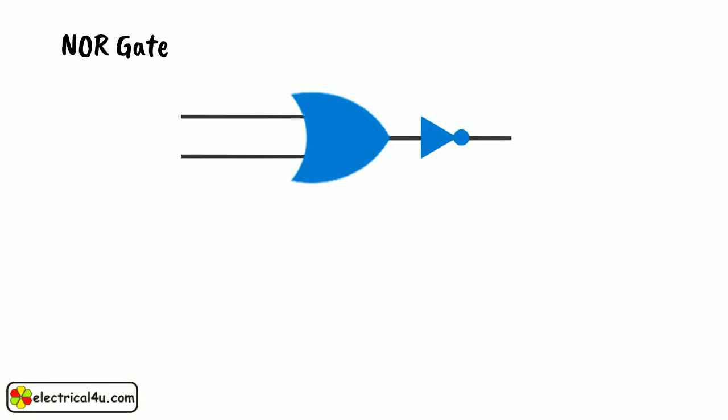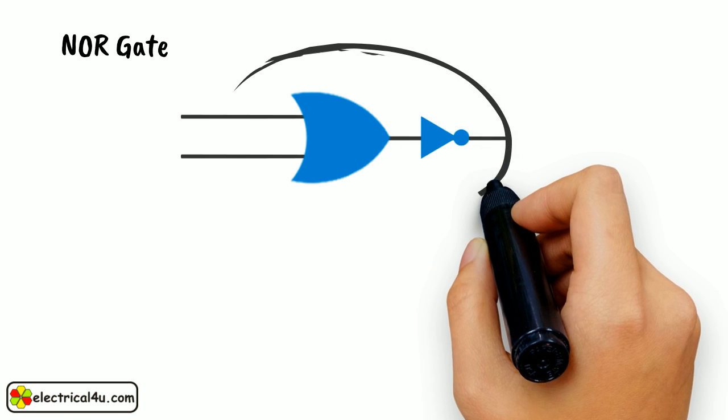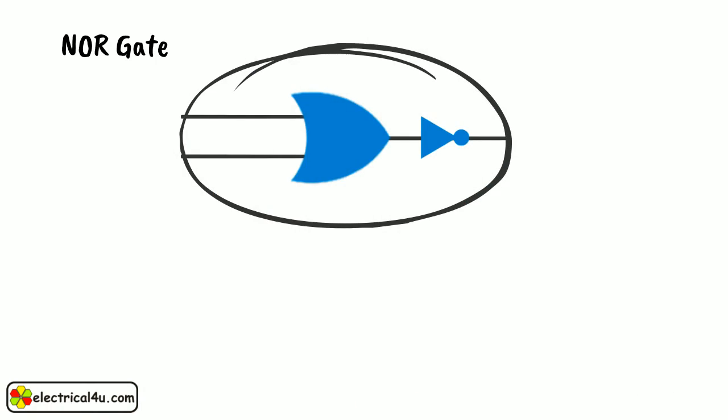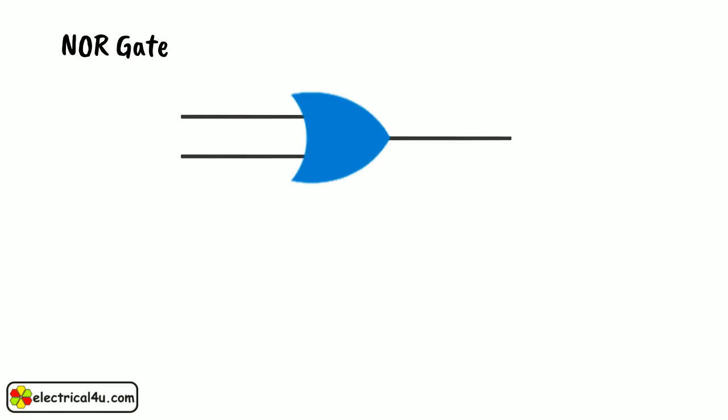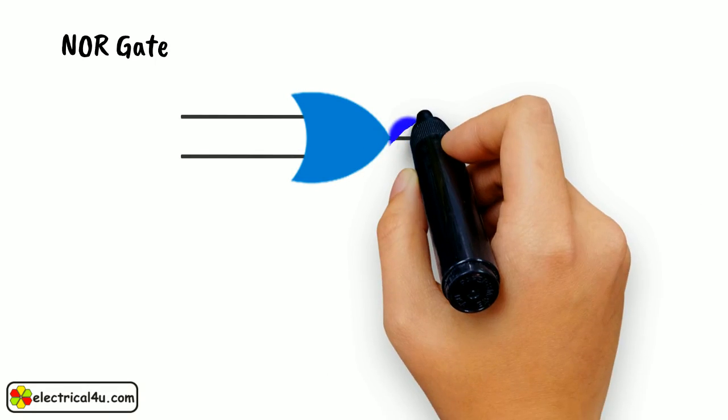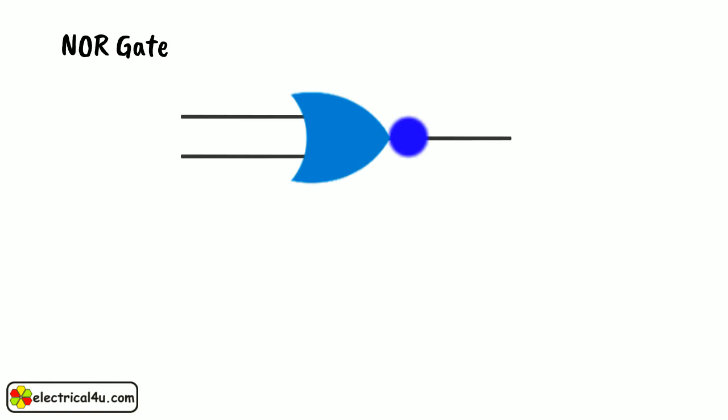The basic logic construction of the NOR gate is shown here. The symbol of NOR gate is similar to OR gate but one bubble is drawn at the output point of the OR gate in the case of NOR gate.